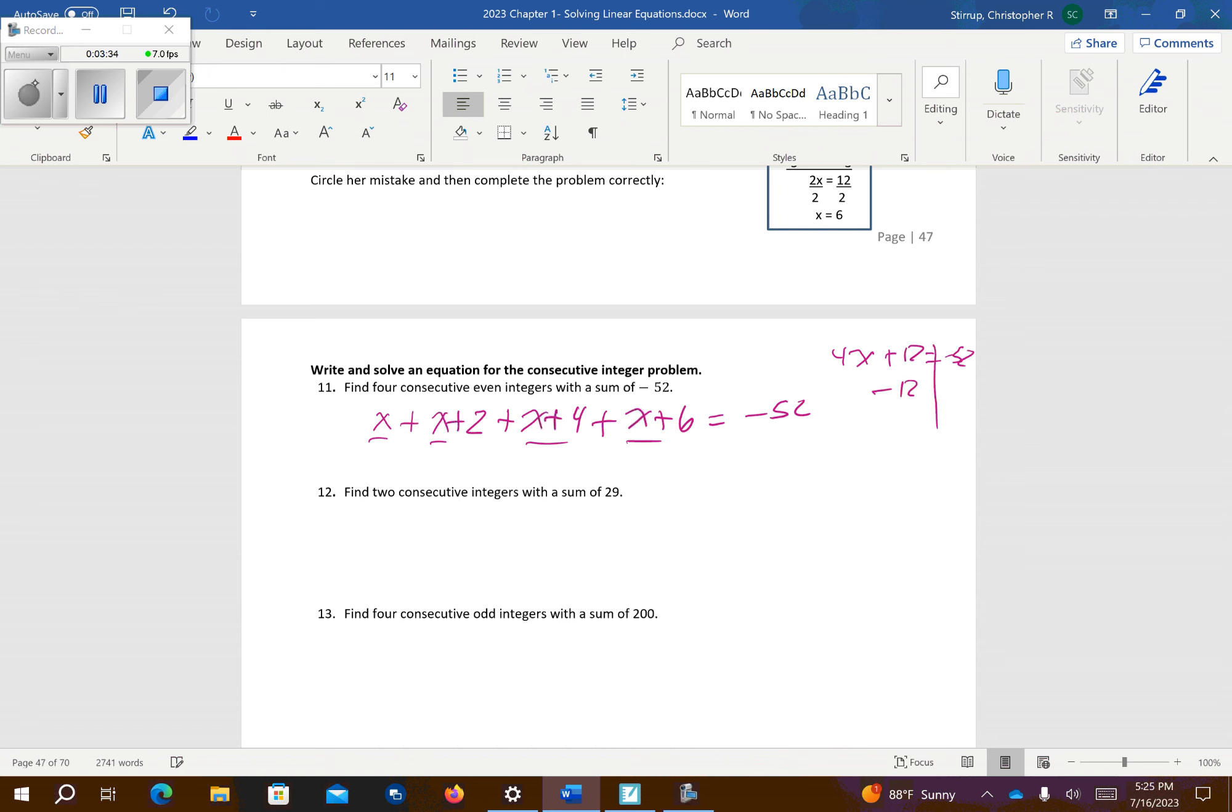Let's go ahead and subtract 12. So that's going to be 4x equals negative 64. Divide each side by 4. So x equals negative 16. So I get negative 16 is my first number. If I add to that, I get to negative 14. If I add 4 to the original, I get negative 12. If I add 6 to the original, I get negative 10.